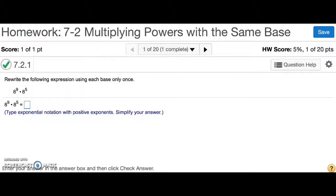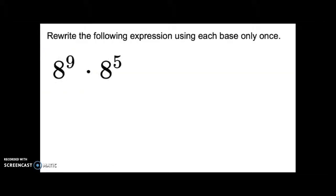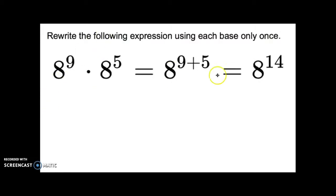Number 1 is asking me to rewrite the following expression using each base only once. In order to multiply these, the bases have to be the same, and they are. When we multiply expressions with exponents and they have the same base, the rule is to simply add the exponents together. So we have 8 being raised to 9 plus 5; we add 9 and 5 together, which is 14, so our answer is simply going to be 8 to the 14.